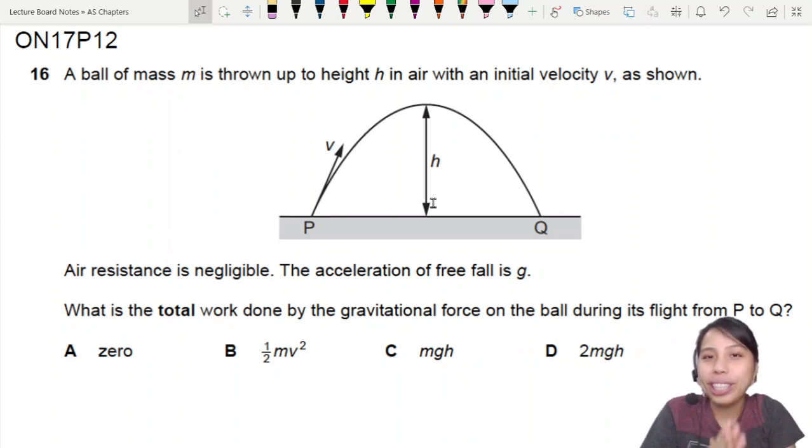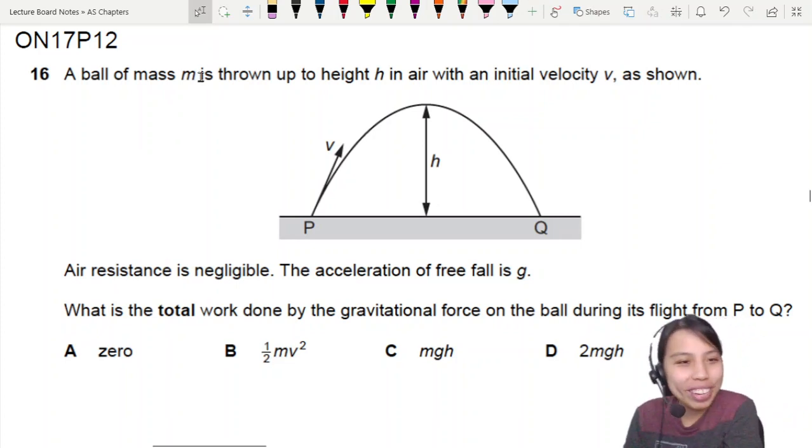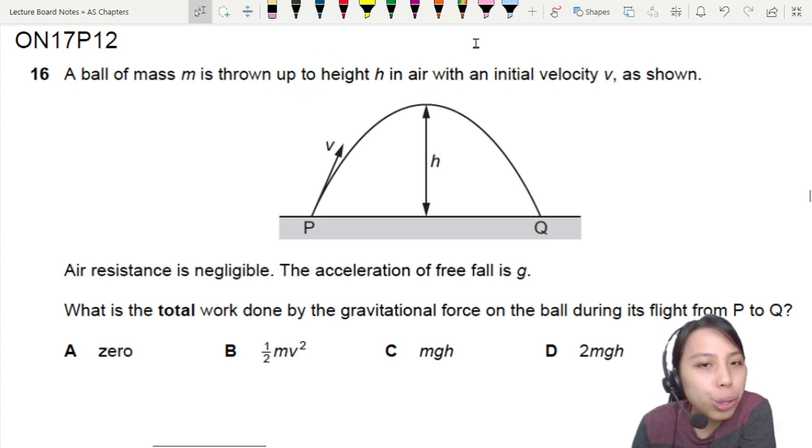What we have here is a projectile motion. I'll throw it back to kinematics. A ball of mass M is thrown up to height H in the air with an initial velocity. So there we go, goes up, comes down.